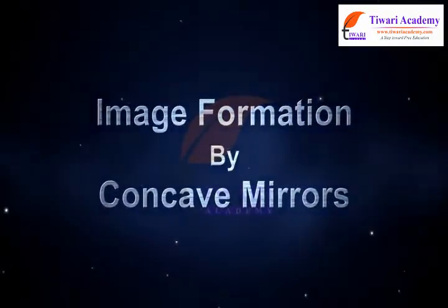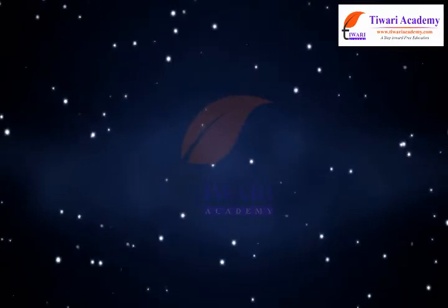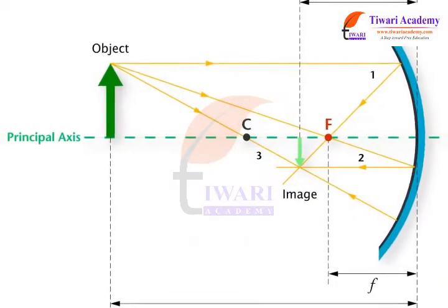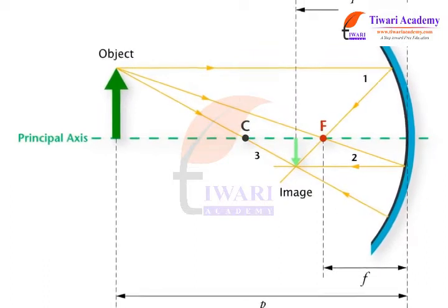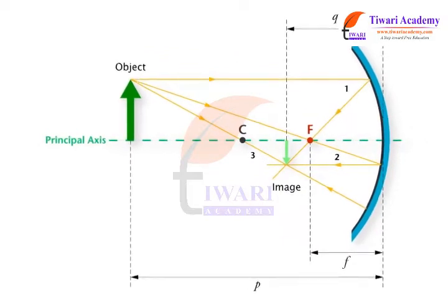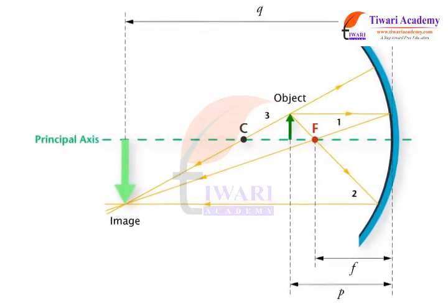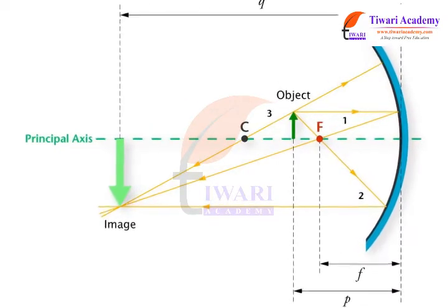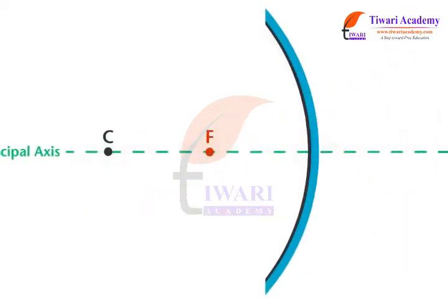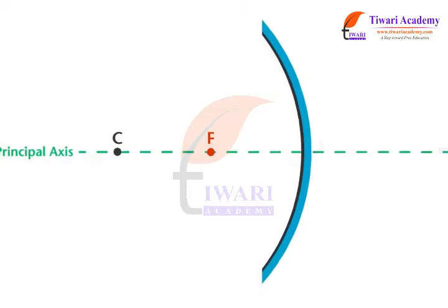Image Formation by Concave Mirrors. The method of locating the image produced by a concave mirror consists of drawing light rays emanating from key points on the object and finding where these rays are brought to a focus by the mirror. This task can be accomplished using just four simple rules.